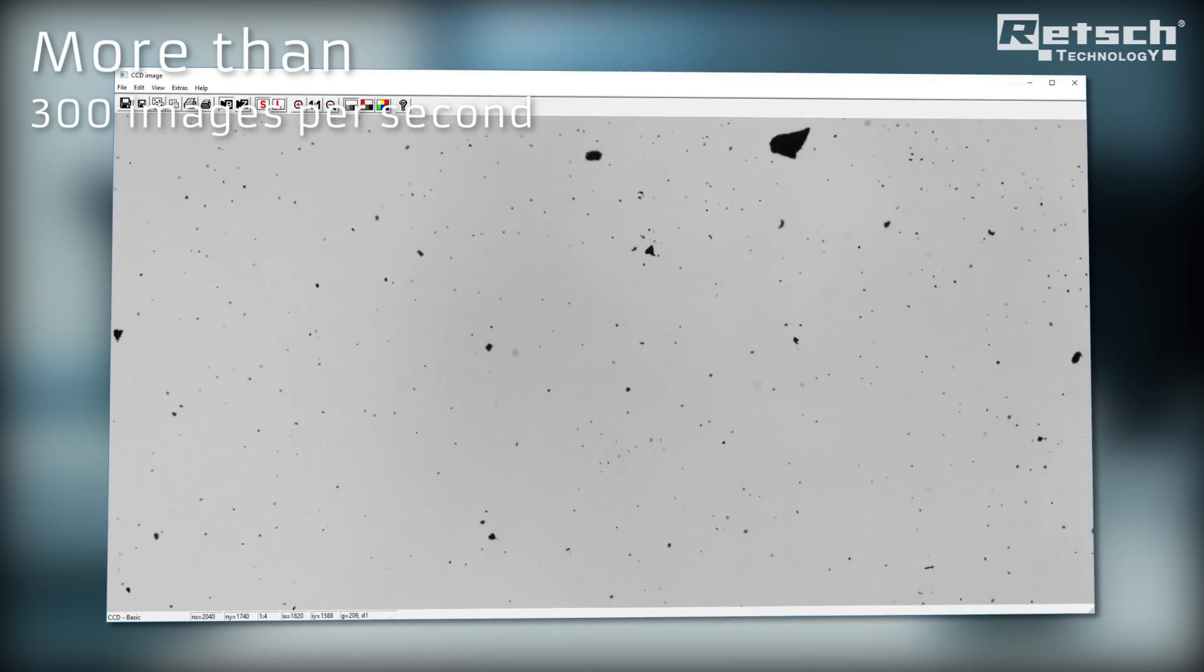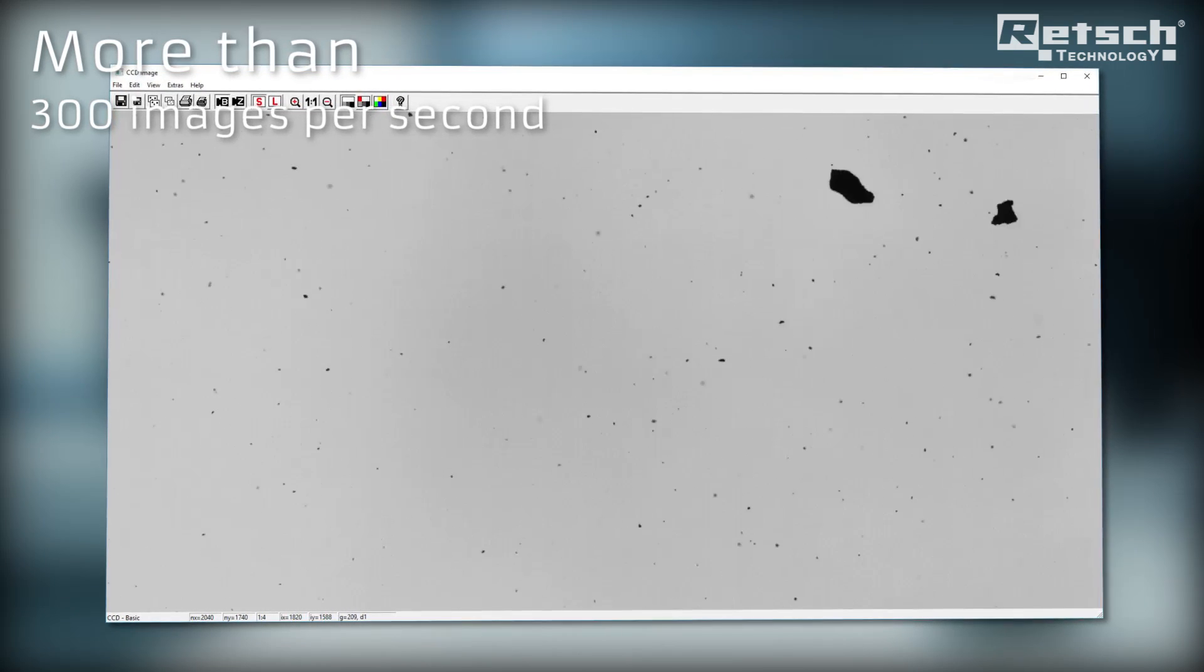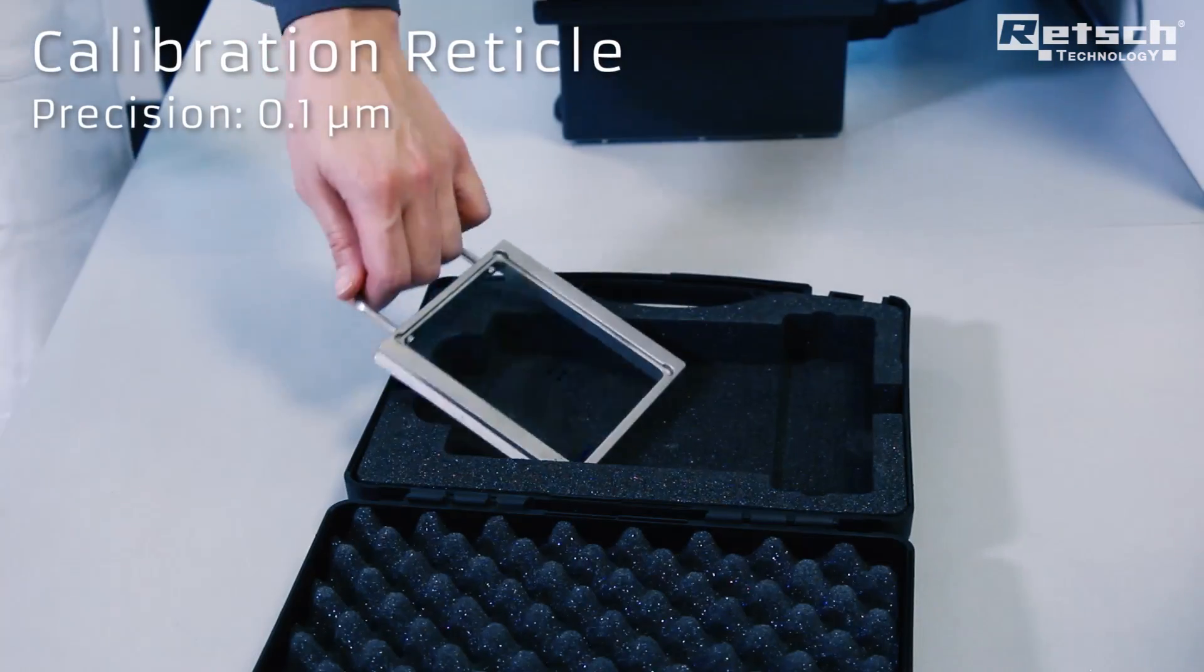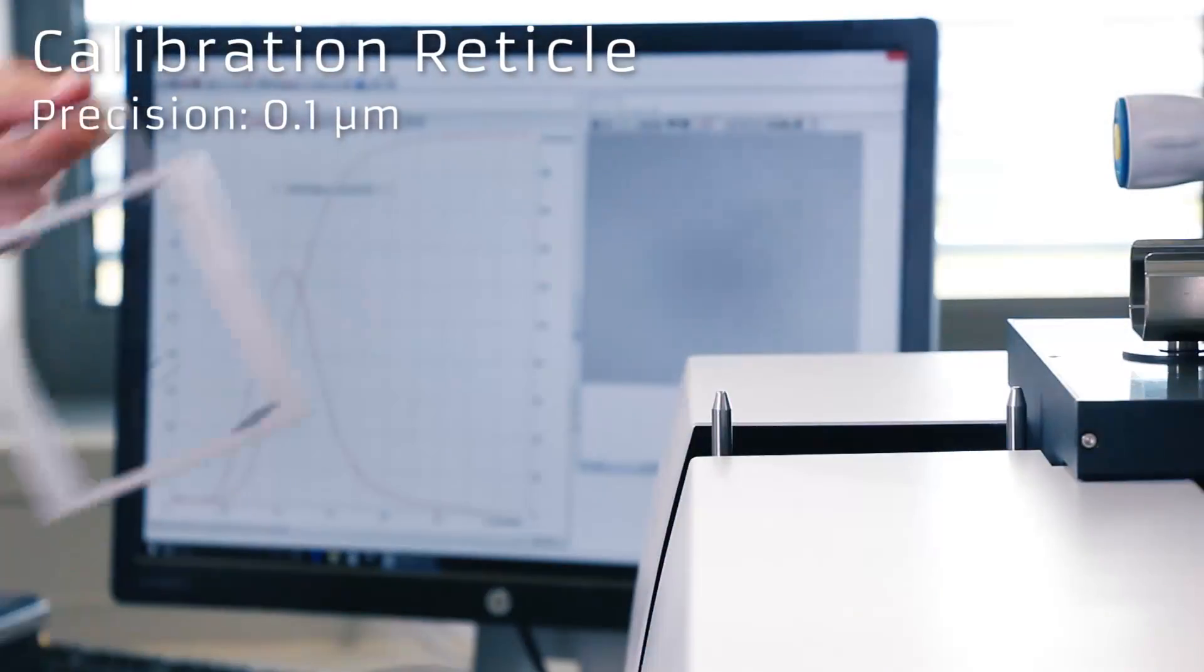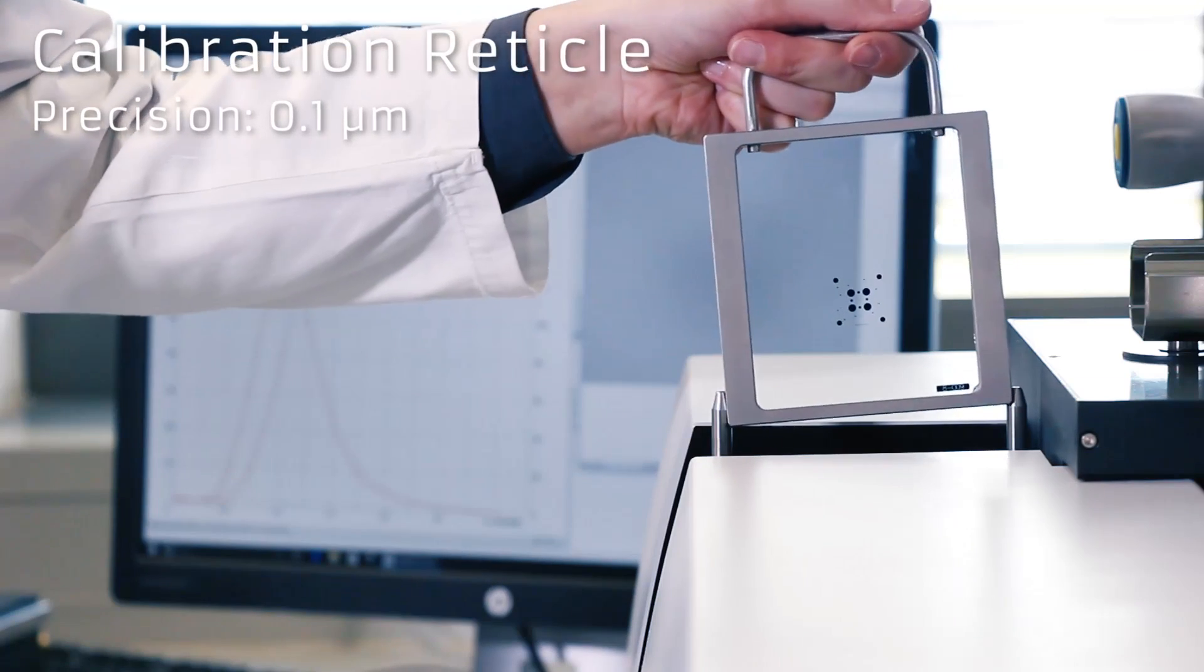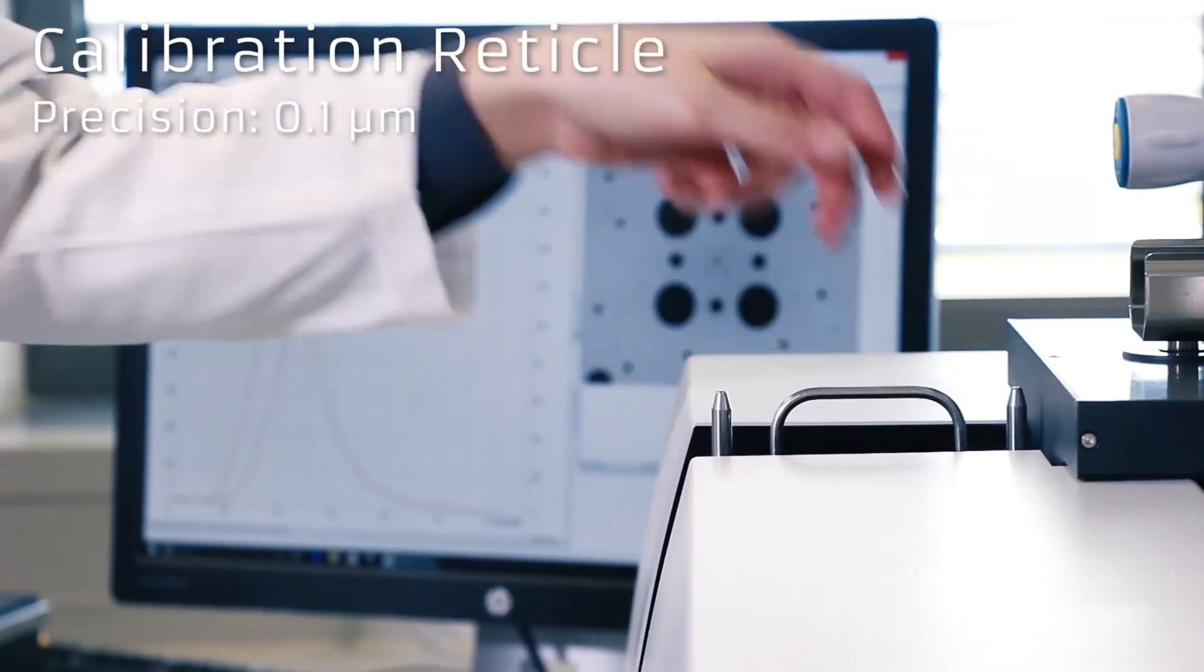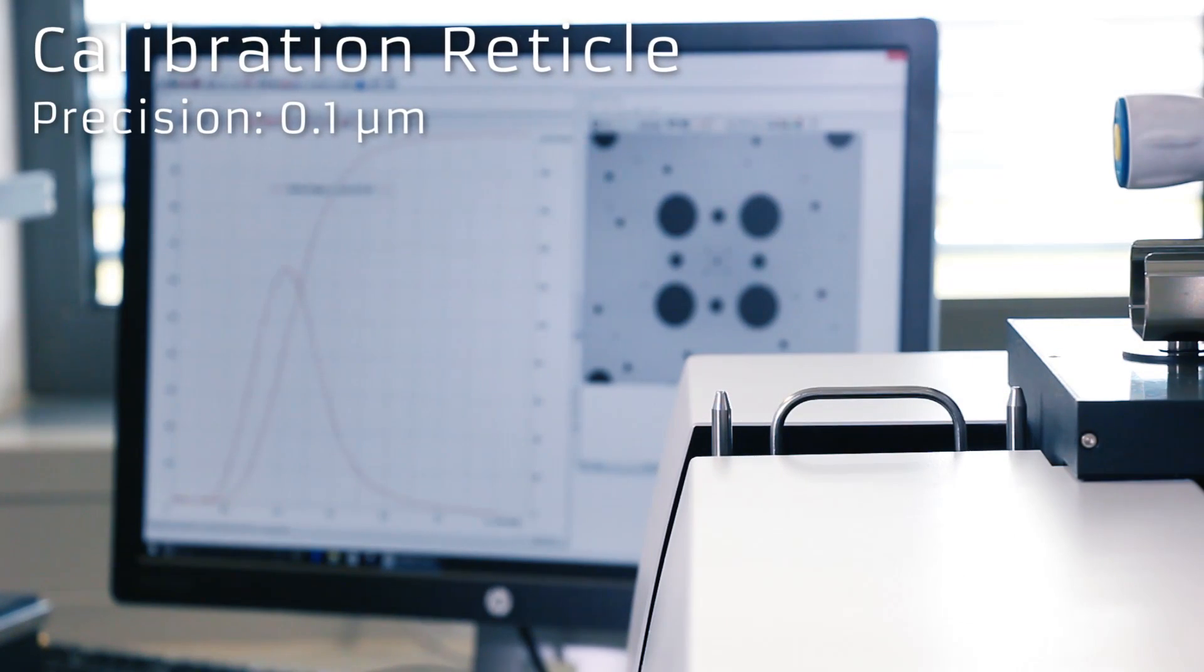The system records more than 300 images per second, with each image containing several hundred particles. The magnification of the cameras is determined by using a calibration reticle with a precision of 0.1 micrometers. Recalibration of the instrument can be done any time within a few seconds.